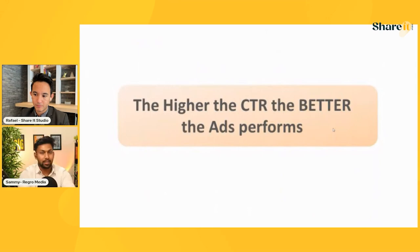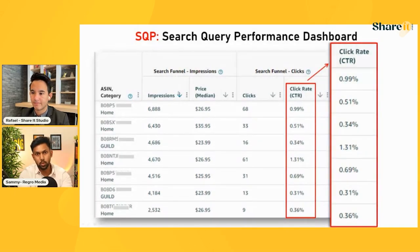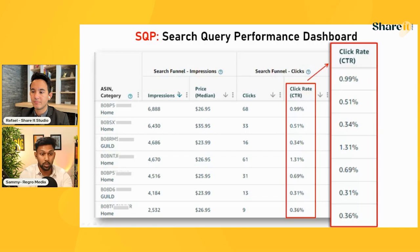Obviously the higher the CTR, the better the ad performs. In Search Query Performance — which you can find under Catalog Performance report — you can see your real-time organic click-through rate and compare it with competitors. That report shows each ASIN in your catalog and what the CTR, CVR, and other data points are. This is raw data directly from Amazon, not manipulated by any external third-party software.